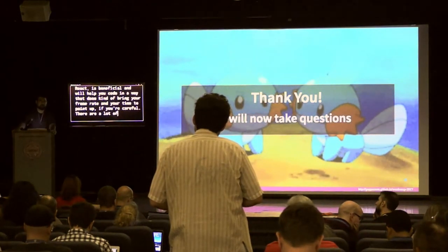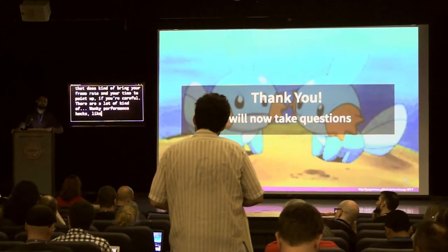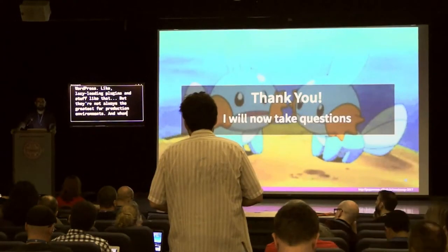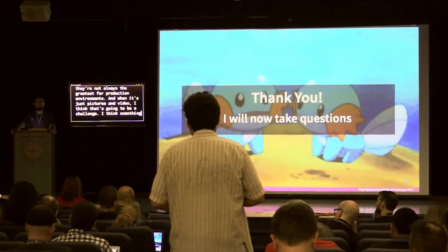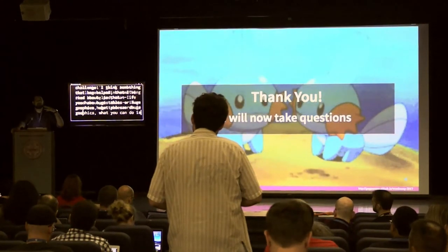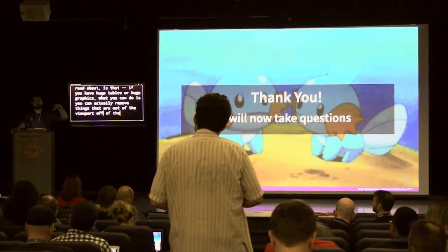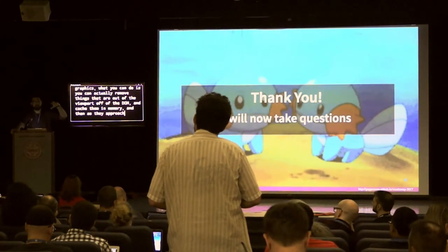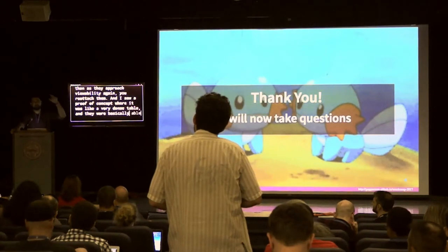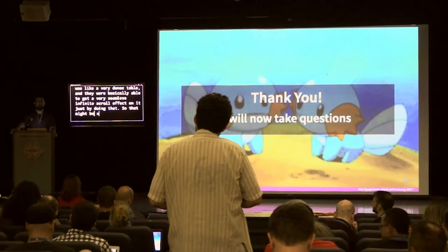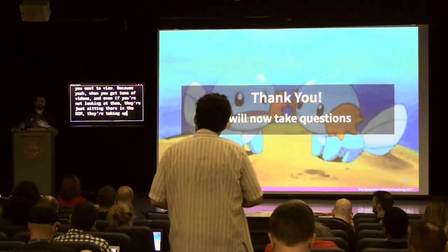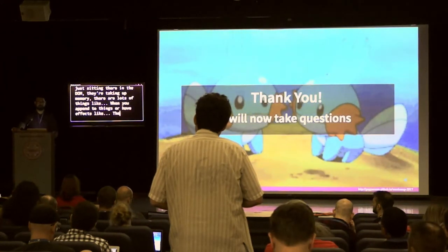Having the options to manage state within React is beneficial and will help you code in a way that brings your frame rate and time-to-paint up if you're careful. There are lazy load plugins in WordPress but they're not always great for production environments. Something I've read about: if you have huge tables or graphics, you can actually remove things that are out of the viewport off the DOM and cache them in memory, then reattach them as they approach viewability again. I saw a proof of concept with a very dense table achieving a seamless infinite scroll effect using that technique.